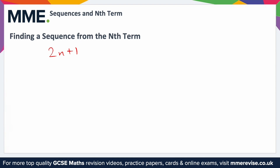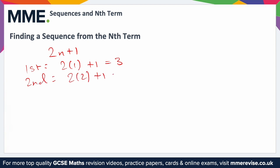So if we want to find the first four terms for 2n plus 1, the first term is when we substitute 1 in: 2 lots of 1 plus 1. 2 lots of 1 is 2, plus 1 is 3. The second term: we substitute 2 in, so that's 2 lots of 2, which is 4, plus 1, so 5.